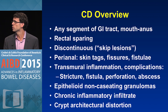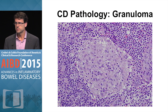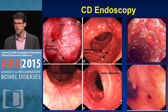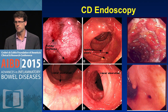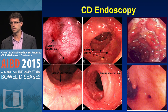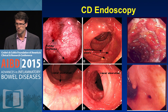Pathologically, you see epithelioid non-caseating granulomas as well as chronic inflammatory infiltrate and crypt architectural distortion. This is a typical Crohn's granuloma — epithelioid and non-caseating. Endoscopically, you can have some mild features of patchy erythema, some aphthous ulceration, more moderate findings with some linear ulceration, and then severe inflammation with deep fissuring, penetrating ulcers, and even fistulae.